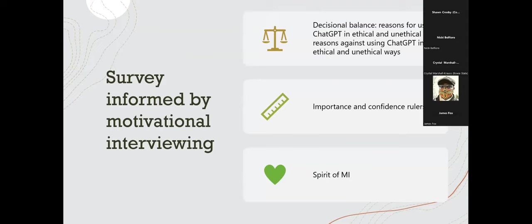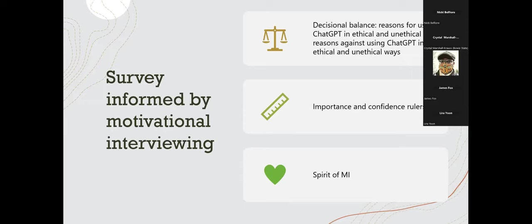Finally, I had students complete an anonymous survey informed by motivational interviewing techniques, including a decisional balance where they weighed reasons for ethical and unethical generative AI use, and importance and confidence meters. On a scale of 0 to 10, how important is it to use generative AI in ethical ways? And if you said a seven, why wasn't it a five — why wasn't it a lower number? That helps people engage in change talk, and with the confidence ruler, build confidence in their ability to use generative AI ethically. Throughout this class, I embraced the spirit of motivational interviewing by radically accepting that students get to make their own choices and wanting to give them the tools to make those decisions in an informed way.